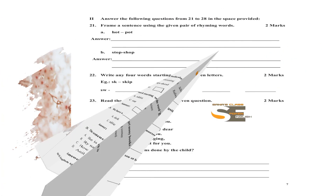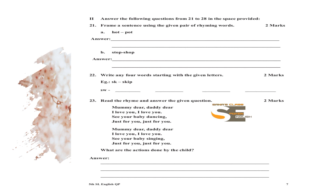Question 21: Frame a sentence using the given pair of rhyming words. What you have to do is use the given rhyming word pairs to frame a sentence for each pair.